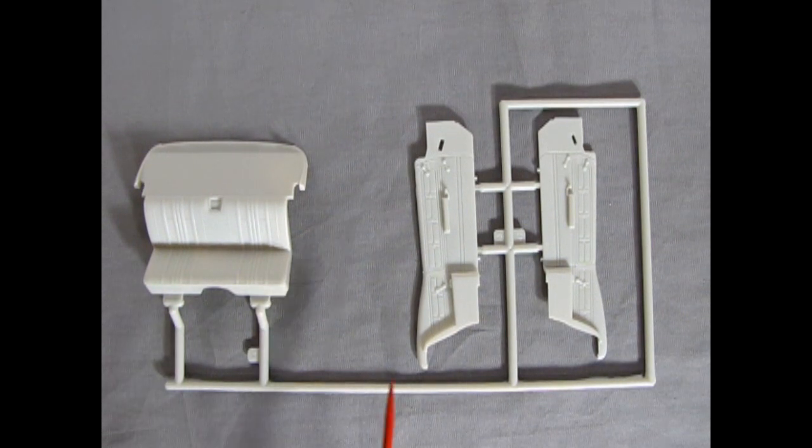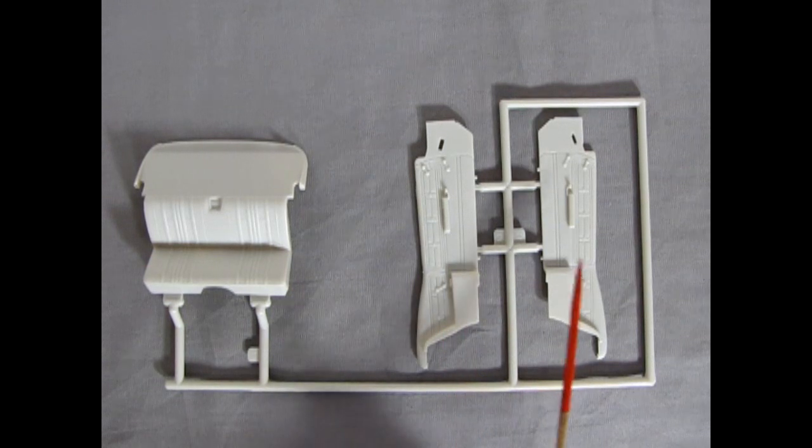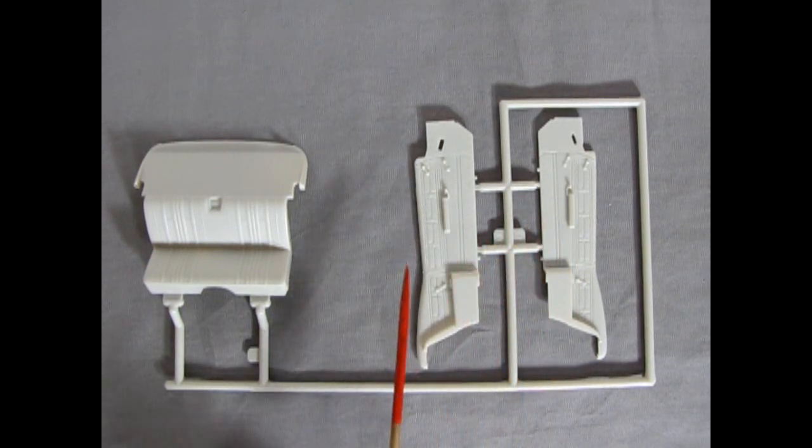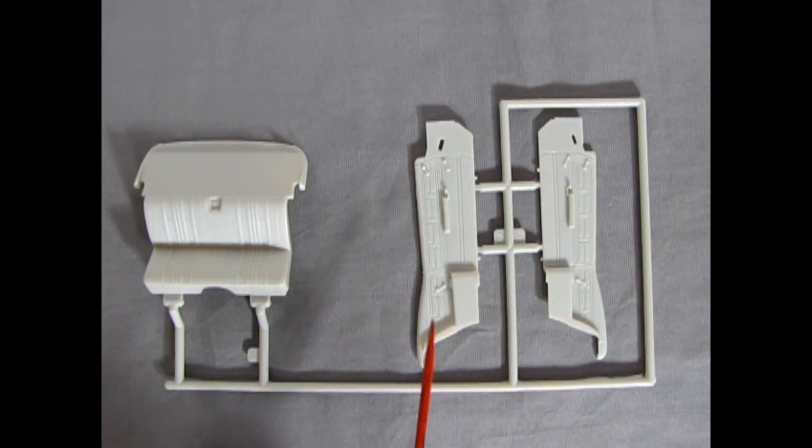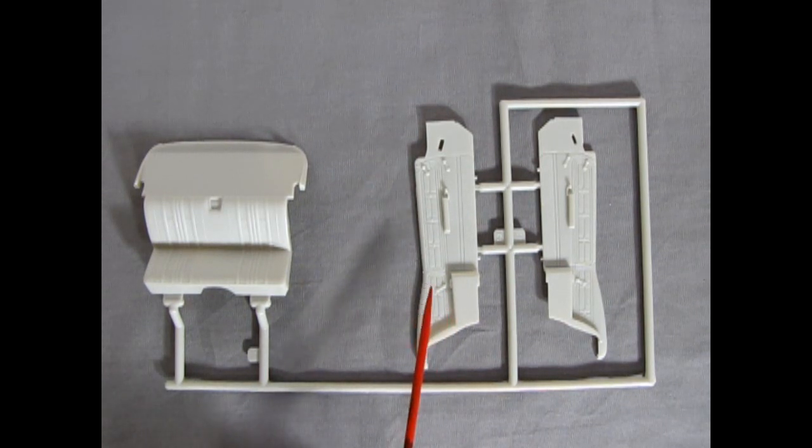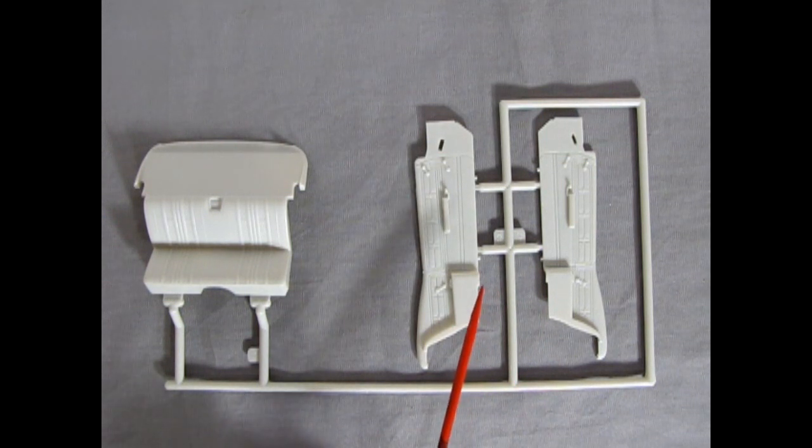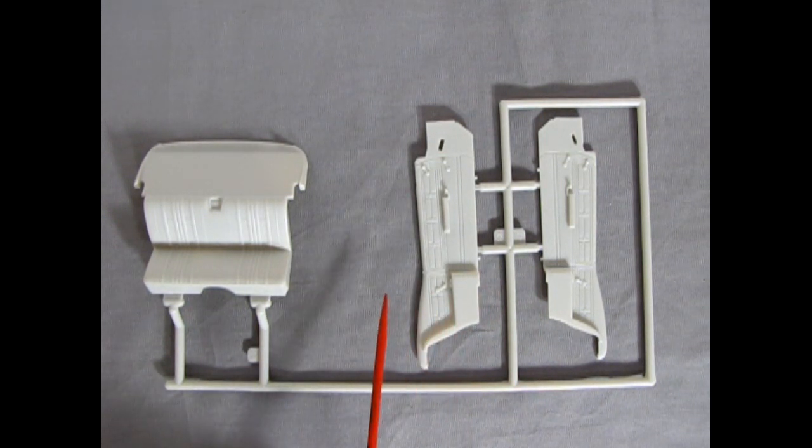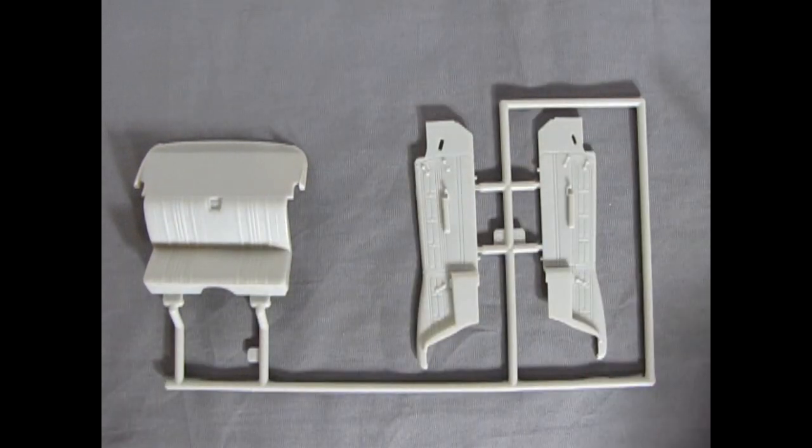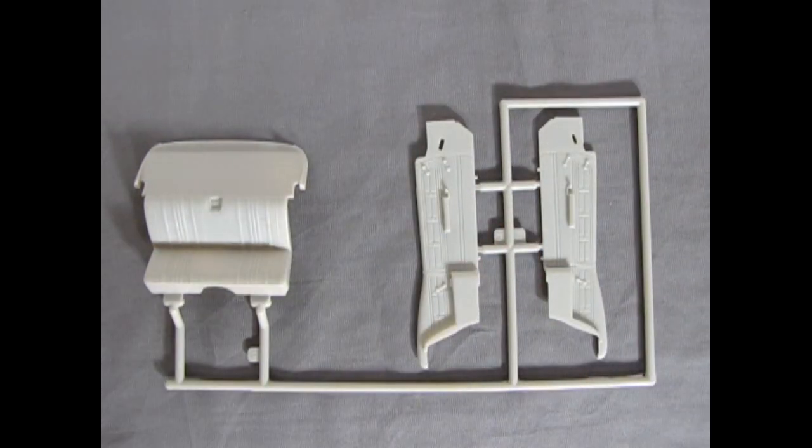Here on this parts tree, we have the interior panels. And AMT of this era was generous enough to mold these flat and not like a tub, like some of the other kits that are older than this. Of course, this kit came out in 1997 when AMT was competing with Ravel and Tamiya of Japan for Best Model Awards.